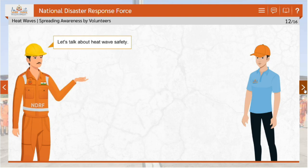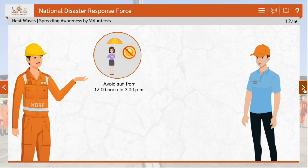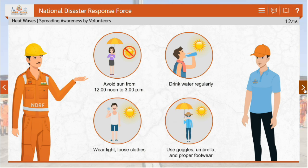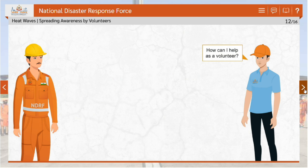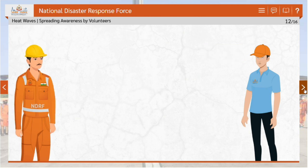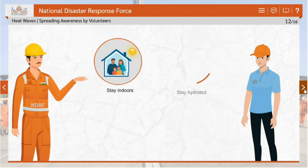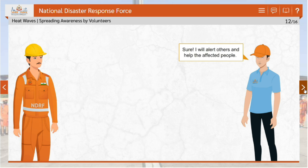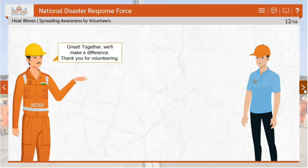For heat wave safety: avoid the sun from 12 noon to 3 p.m., drink water regularly, and wear light, loose clothes; use goggles, an umbrella and proper footwear. As a volunteer, you can educate people on heat wave precautions — teach them to stay indoors, stay hydrated and dress appropriately. Alert others and help affected people; together we can make a difference. Thank you for volunteering.